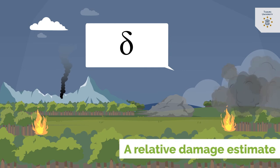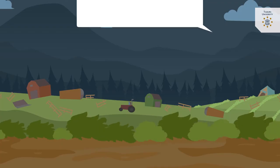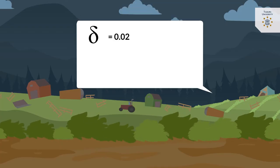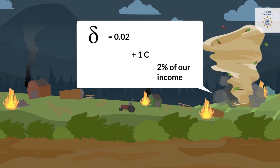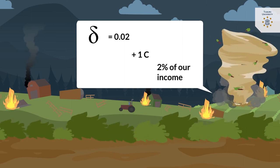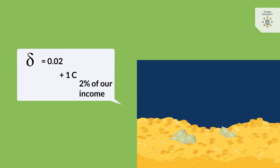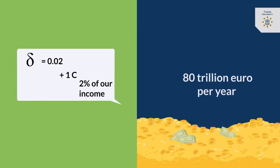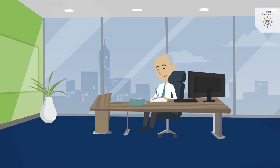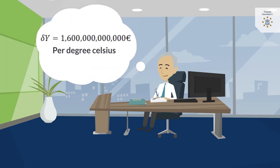Importantly, it is a relative damage estimate. Thus, if delta equals 0.02, that means that each degree Celsius temperature rise will cause damages that equal 2% of our income. We thus multiply that number with world income, 80 trillion euros per year, for which we use the symbol Y. If we multiply the two, we find that each degree Celsius of temperature rise will cost us 1.6 trillion euros.